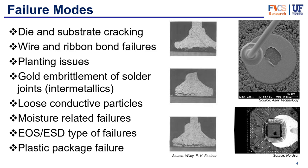Another failure type is wire and ribbon bond failures, where the bonds don't work very well. This is one of the things the ball shear test checks for — to see if bonds are made properly or are weak. You can have planting issues where the bond isn't placed properly. You can also have gold embrittlement of solder joints that creates intermetallics, sometimes referred to as 'purple plague' because those intermetallics can have a purple tone. Between the aluminum and the gold you get intermetallics that make the metal brittle and prone to cracking.